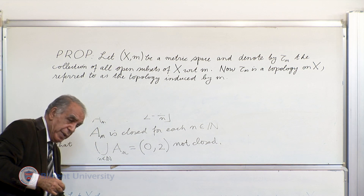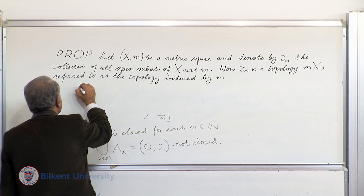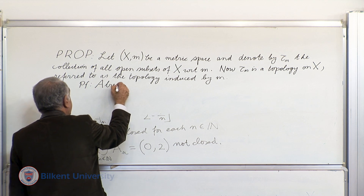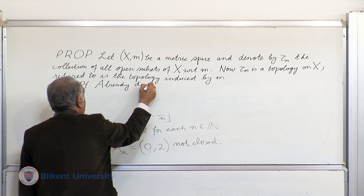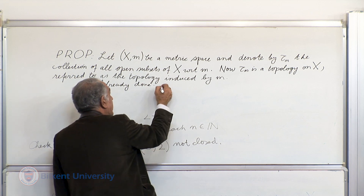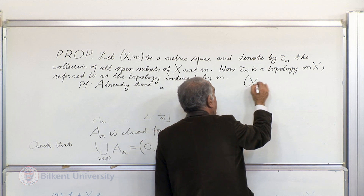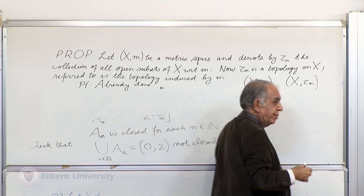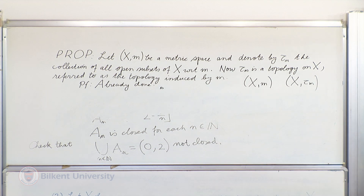Proof: we have already done it. We will make no distinction between (X, M) and (X, tau_M) — they will stand for the same thing. One is expressing the space as a metric space; the other is in terms of the induced topology. For our purposes, they're the same.